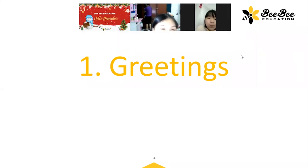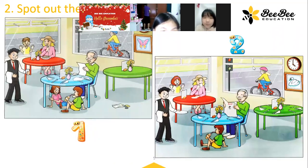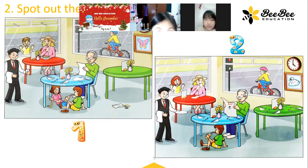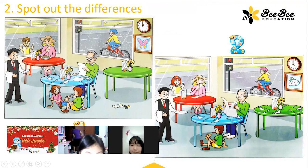Hello, Bi. Hello, Yang. Welcome to the speaking test. Now let's go to card one. You know these cards. What are the differences between the two pictures? Bi, you are picture one. Yang, you are picture two. Okay, now Bi, you are the first. Let's start.